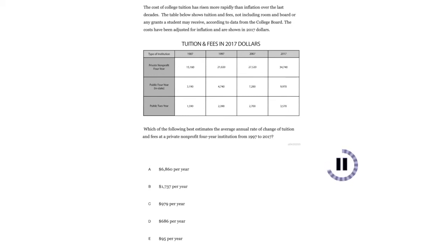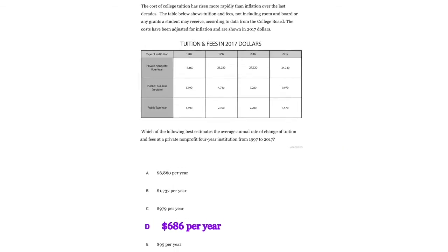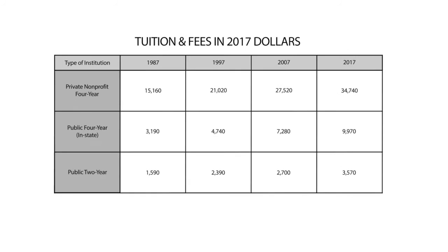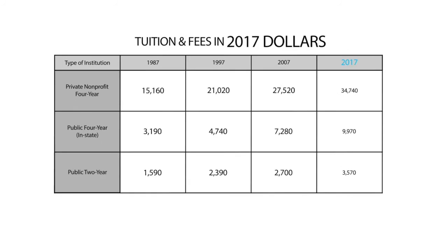Press pause and answer the question. All right, so now we're looking at tuition and fees in 2017 dollars. And what does that mean? That means those figures have been adjusted for inflation so that we're comparing apples to apples — looking at what everything would have cost in 2017 dollars to take inflation out of the influence of the graph or the table.